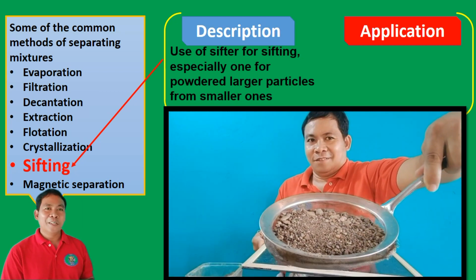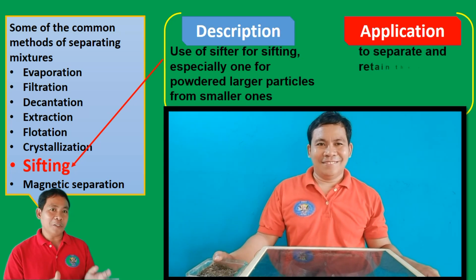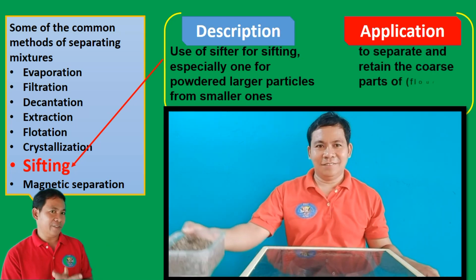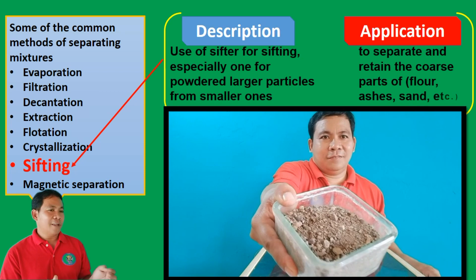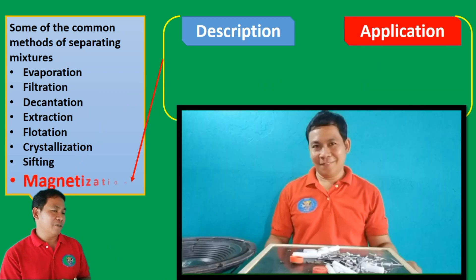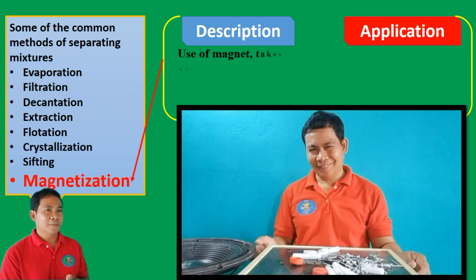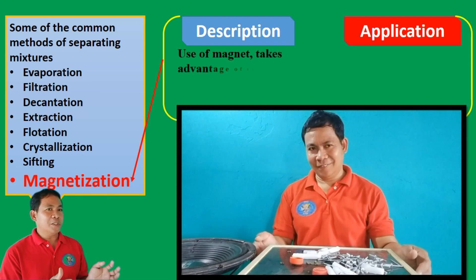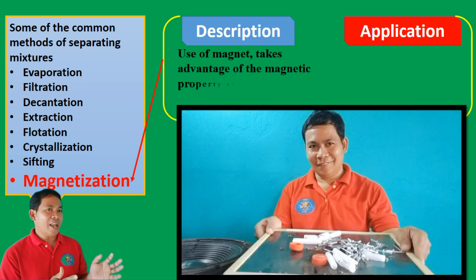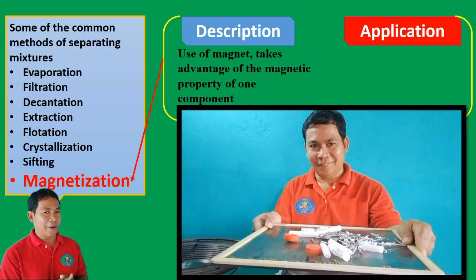Sifting is used to separate and retain the coarse parts of flour, ashes, and sand. Next is magnetization or magnetic separation, which uses a magnet to take advantage of the magnetic property of one component.